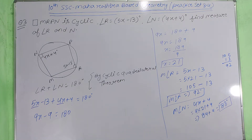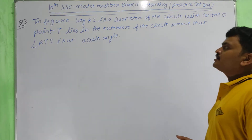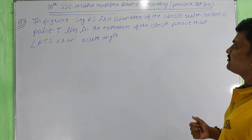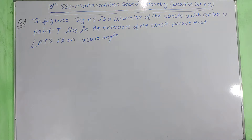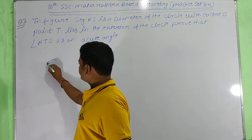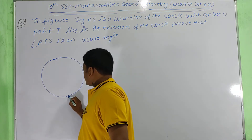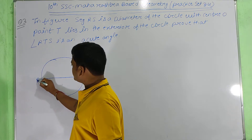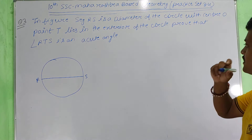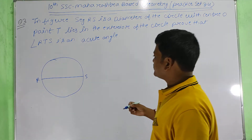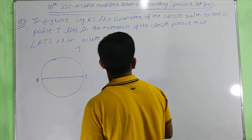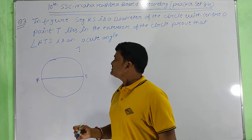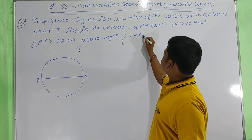Now for the next question: In the figure, segment RS is a diameter of the circle with center U. Point T lies in the exterior of the circle. Prove that angle RTS is an acute angle. Acute angle means angle RTS must be less than 90 degrees. Let us design the circle with center O and RS as the diameter, with T as the exterior point.